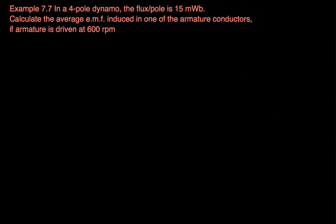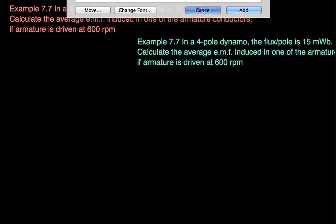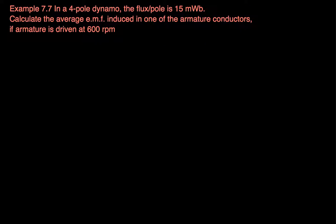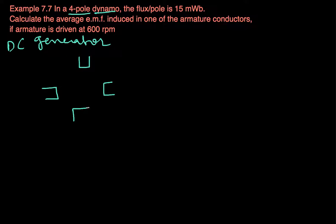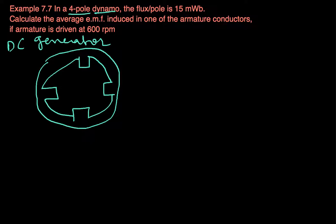Let's do one more simple problem. In a 4-pole dynamo — a dynamo is nothing but a DC generator — it has 4 poles. Let me draw that 4-pole DC generator. If you know the construction of a DC generator, the poles will be fixed. This is the stator of the DC generator and the armature will have conductors inside.